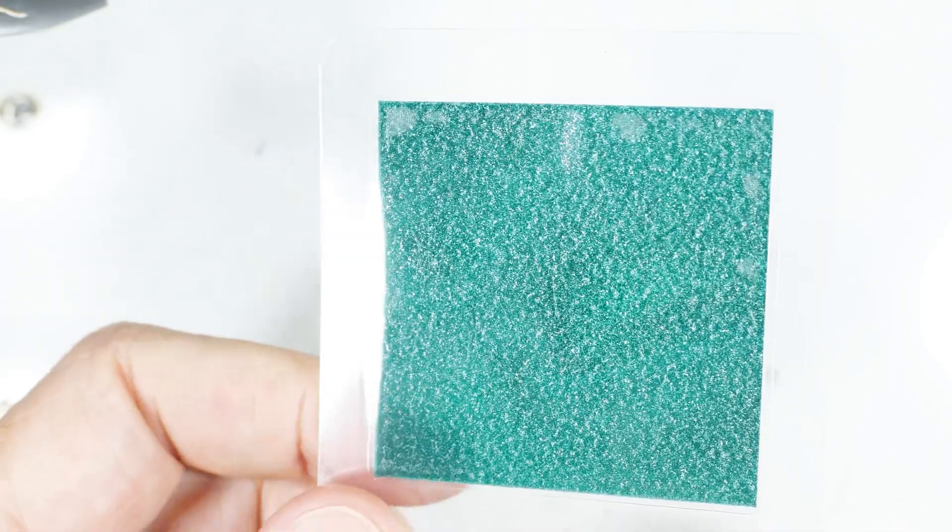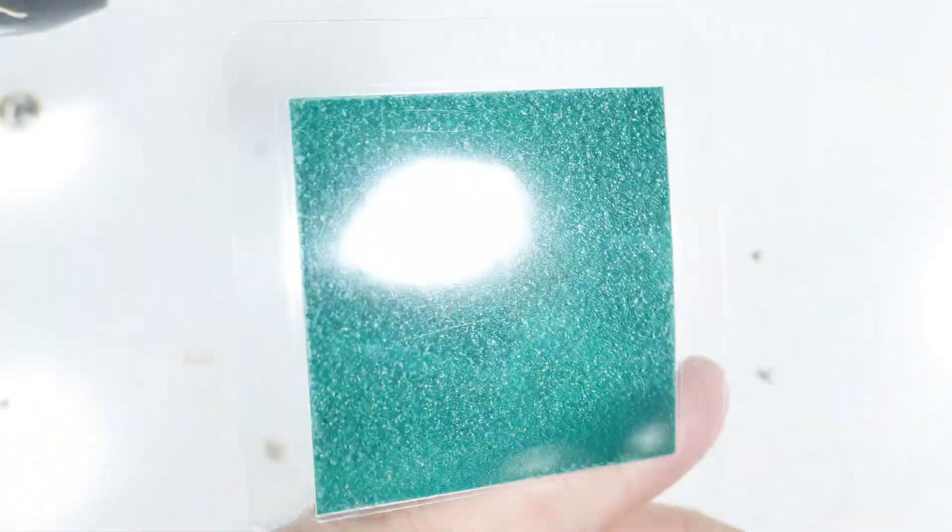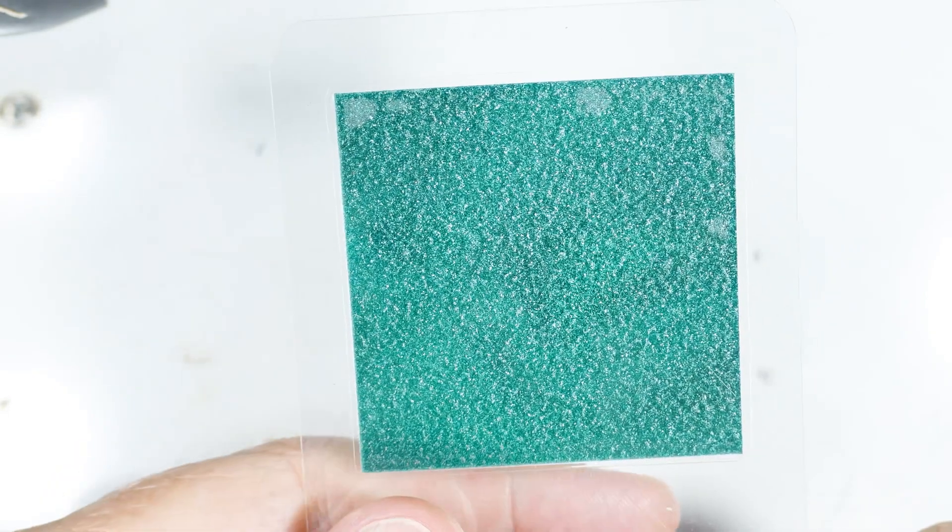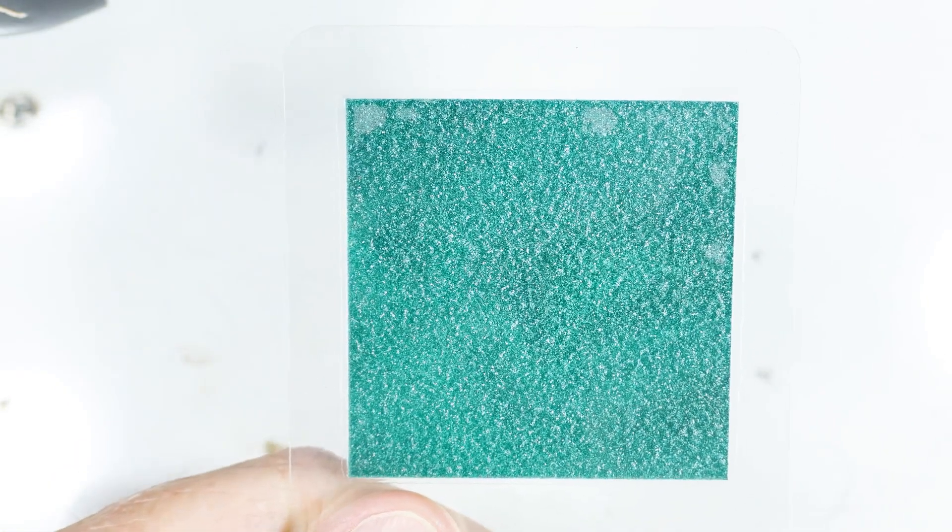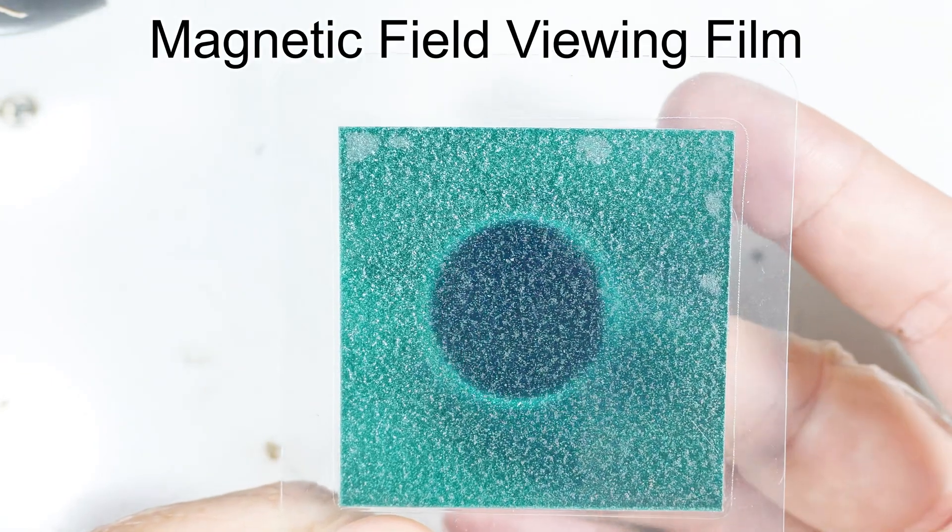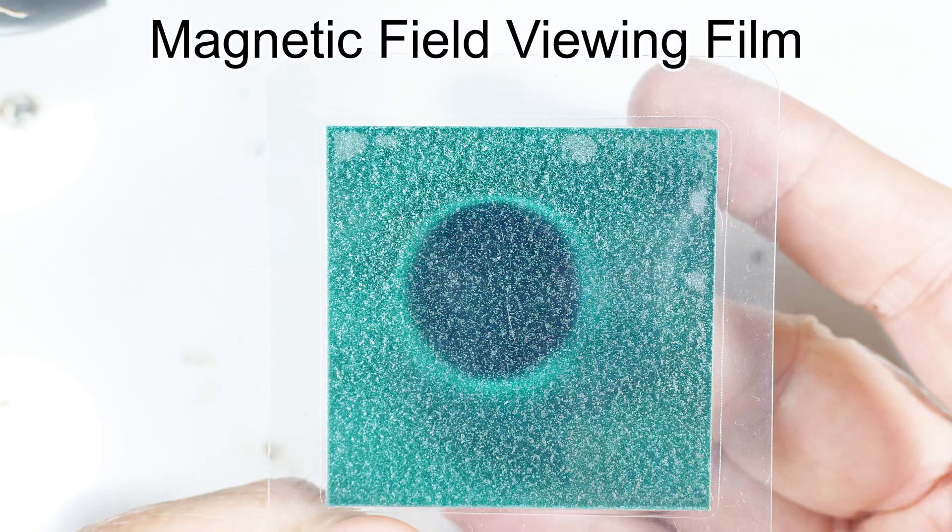Maybe you've seen one of these. This is a card that's supposed to show magnetic fields. Not much to it. What you do is you take your magnet and you put it underneath there and you can see the white line around it.